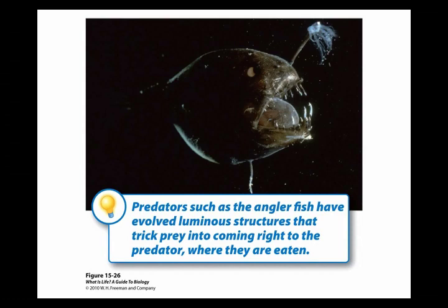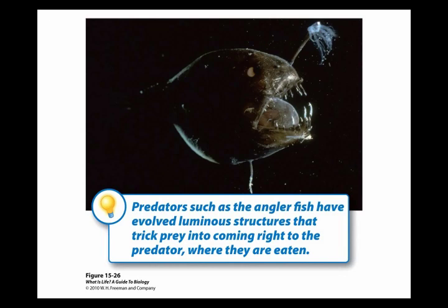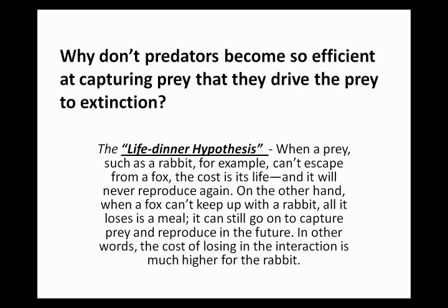Here's another really interesting adaptation where a predator has evolved to lure its prey into its mouth. This is an anglerfish — it lives way down in the dark deep of the ocean, but it has evolved a luminous structure on its head that tricks prey into coming into its mouth, where they get eaten. Those are some fun videos to watch on YouTube if you get a chance.